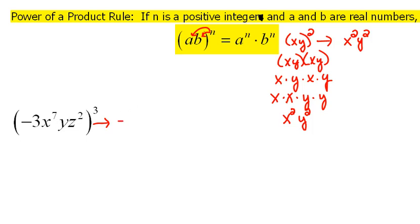So every one of those items is going to get the power. Each one of those factors is going to get the power. So the negative 3 will be raised to the third power. The x to the 7th will be raised to the third power. The y will be raised to the third power. And the z squared will be raised to the third power.